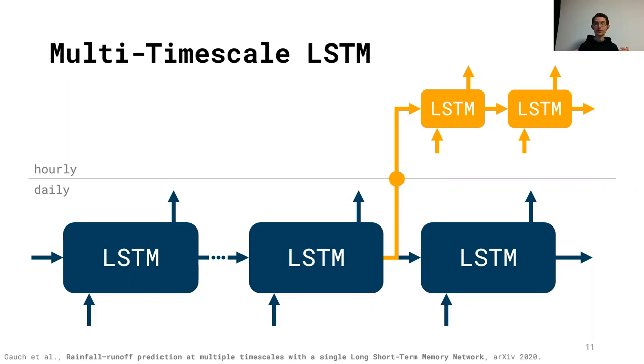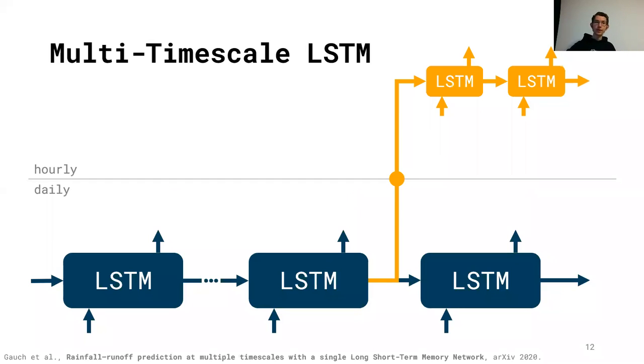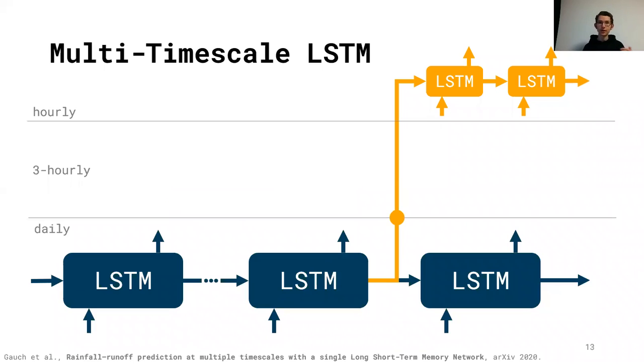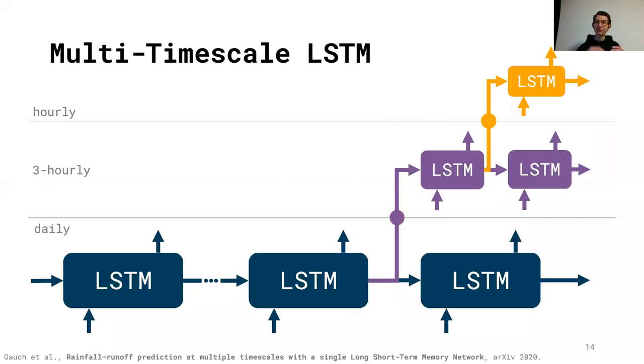Of course, this generalizes to any other timescale other than hourly or daily, so we might have other timescales, we might also have more than just two timescales. For instance, we might also be interested in, say, three hourly predictions. So we could just have another LSTM branch that generates predictions at the three hourly timescale. It's just adding another branch. It's all happening within one model. The fact that it's all happening within one model allows us to get back to this consistency argument where I said that the naive approach will most likely not have predictions that are consistent across timescales.